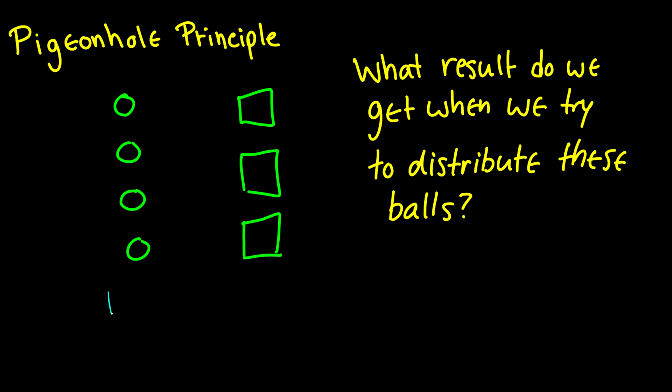On the left here I have a bunch of pigeons, we can also call them items. And on the right we have pigeonholes, which we can also call containers. Pigeonholes are just places where pigeons go. And the question is, when we distribute these pigeons into the pigeonholes, what do we see? What is something that we always see?